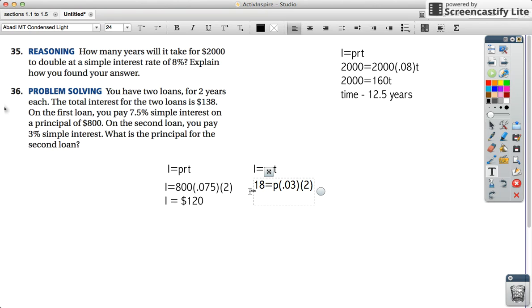So 18 equals, so you take basically 3% multiplied by 2, which would give us 0.06p. We divide both sides by 0.06. And what do we get? We get $300. So the principal of the second loan is $300. And there you go.